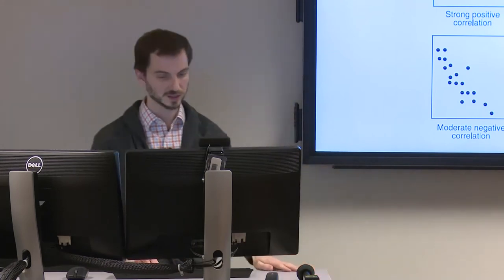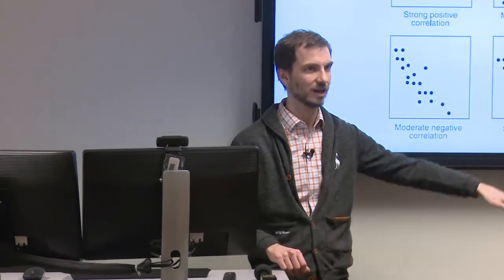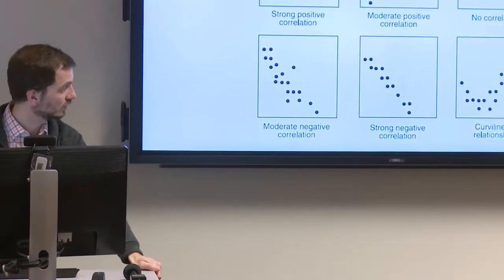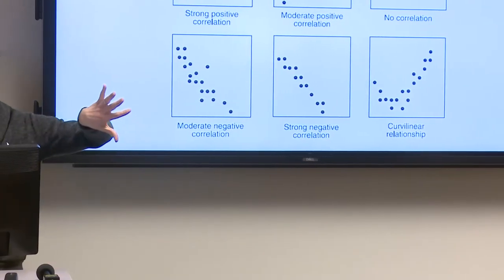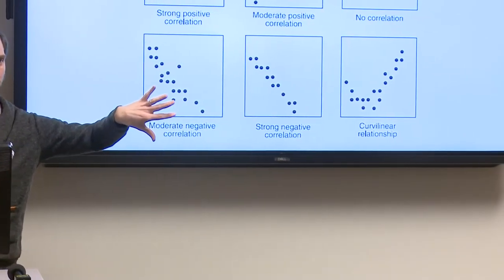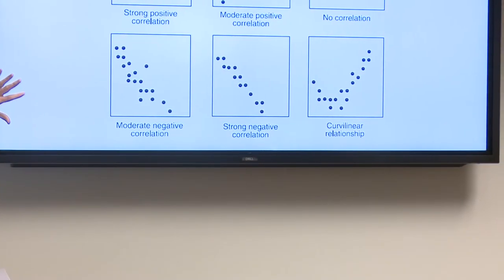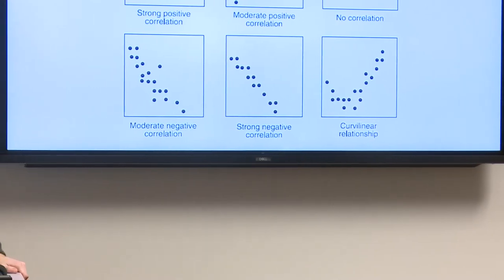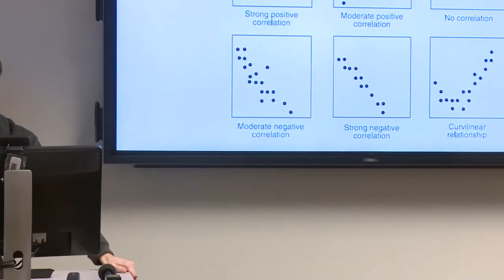And then there's a curvilinear relationship — a distribution where you have higher correlation at the ends and it dips in the middle. Honestly, I haven't seen too many of those.